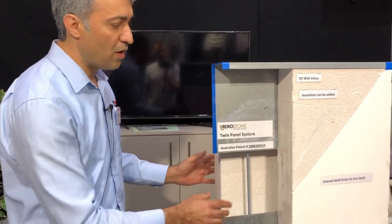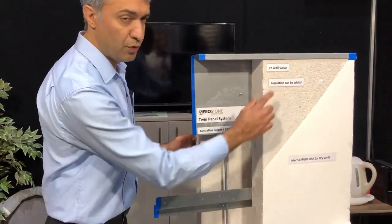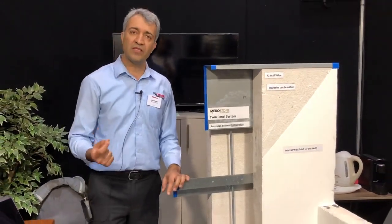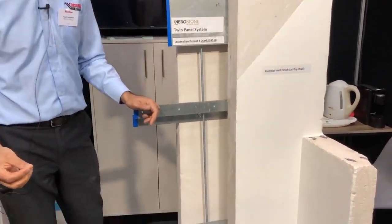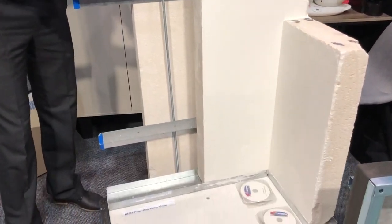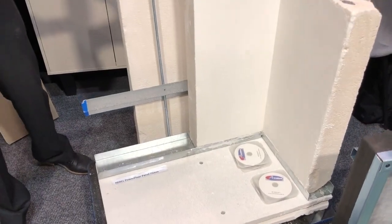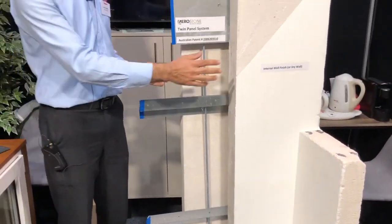The R-value on this system is R2. The R-value on a normal masonry system with double brick is 0.68. By adding insulation to the cavity on this system, you can increase the R-value up to R2.